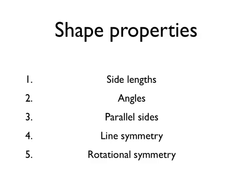Line symmetry is another way — the fourth way of describing a shape through its properties. Does the shape have any lines of symmetry? And finally, rotational symmetry. What order of rotational symmetry does the shape have?